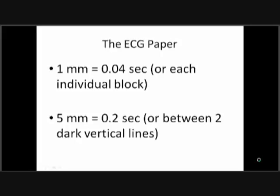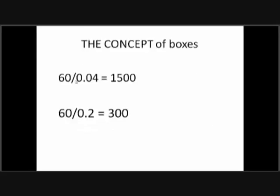One small box is 0.04 seconds in duration; one big square (5 mm) is 0.2 seconds in duration. We need to see how many small boxes or big squares are in one minute, then measure the distance between two R waves and divide the total by that distance. If the heart rate is irregular, P waves show atrial rate and R waves show ventricular rate.